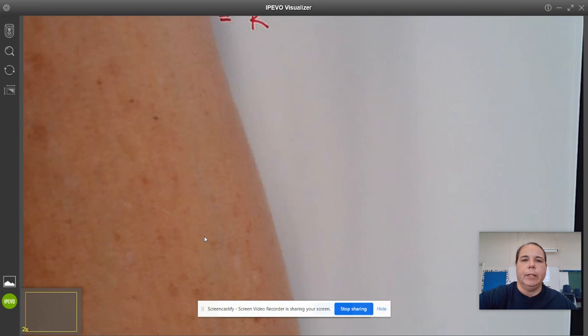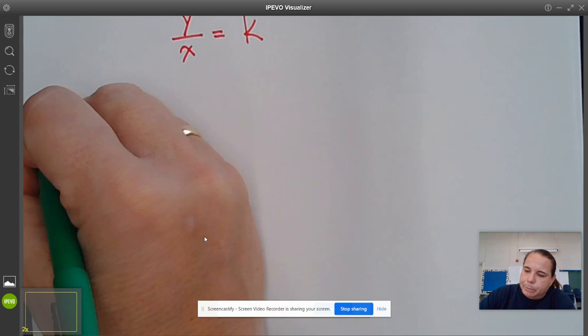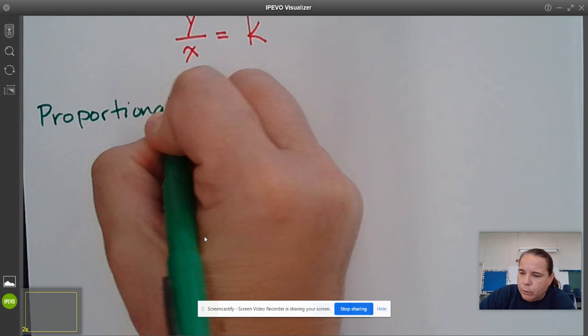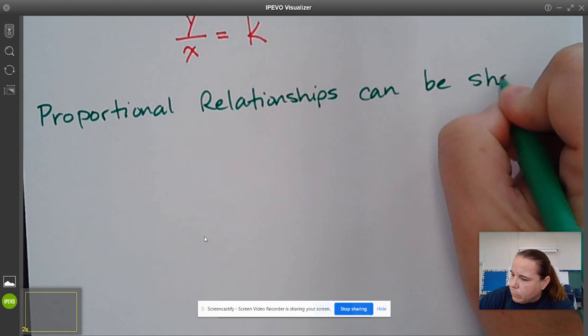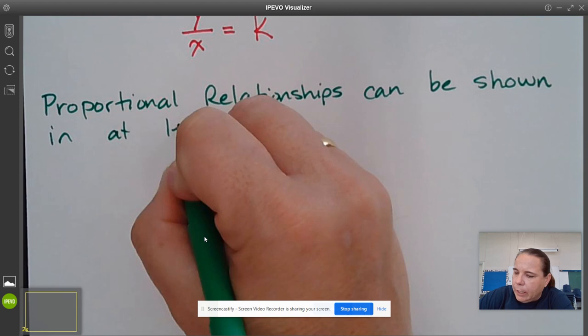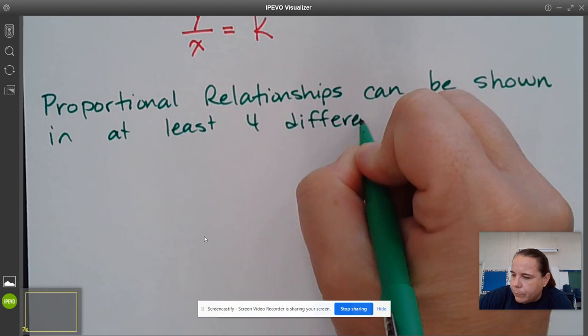So how can we represent proportional relationships? So proportional relationships can be represented in at least four different ways. So proportional relationships can be, I'm going to say shown instead of represented. That's an easier word. In at least four different ways.